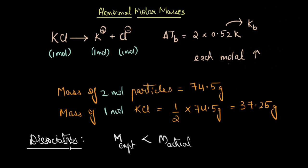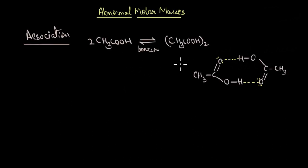We can obviously assume that the exact opposite happens in the case of association. In the case of association, for example, let's take a molecule that associates, acetic acid in a non-polar solvent like benzene. Two molecules of acetic acid would combine with each other in a non-polar solvent like benzene to form a dimer as you can see here.